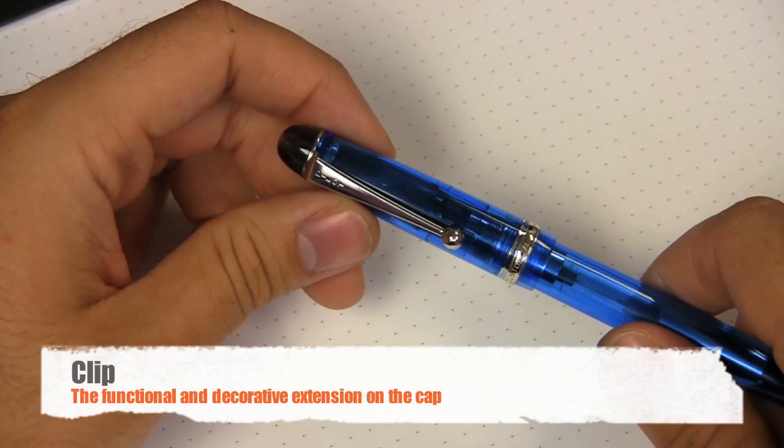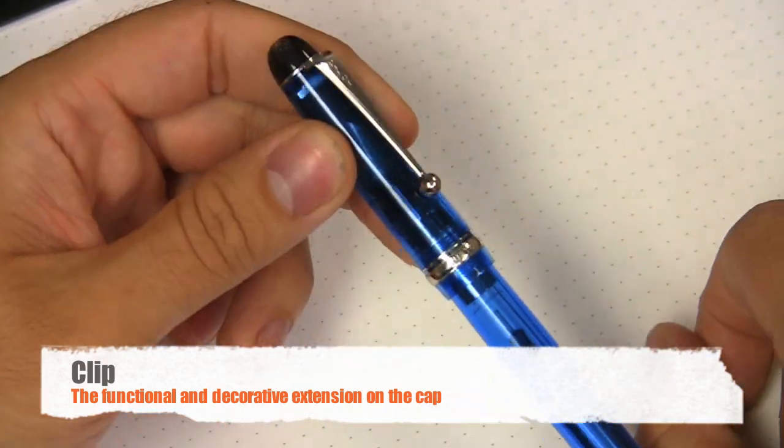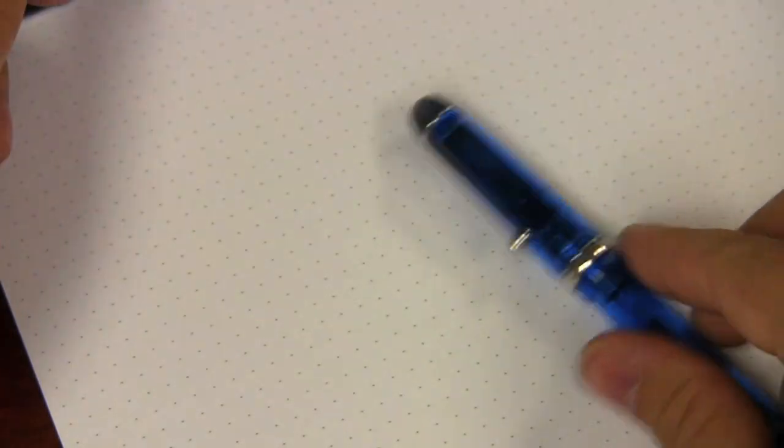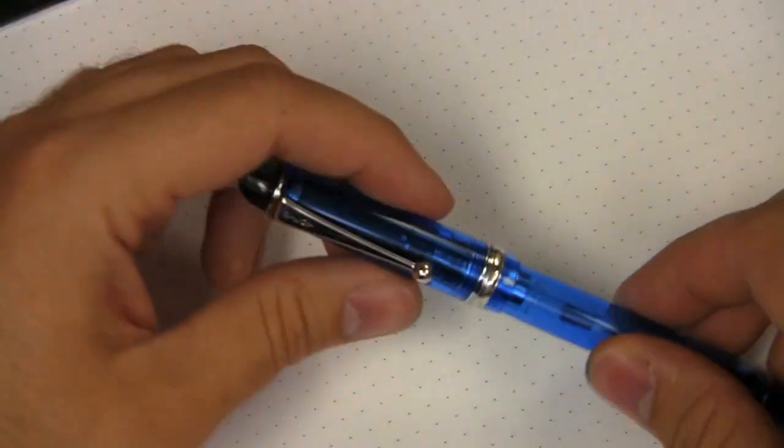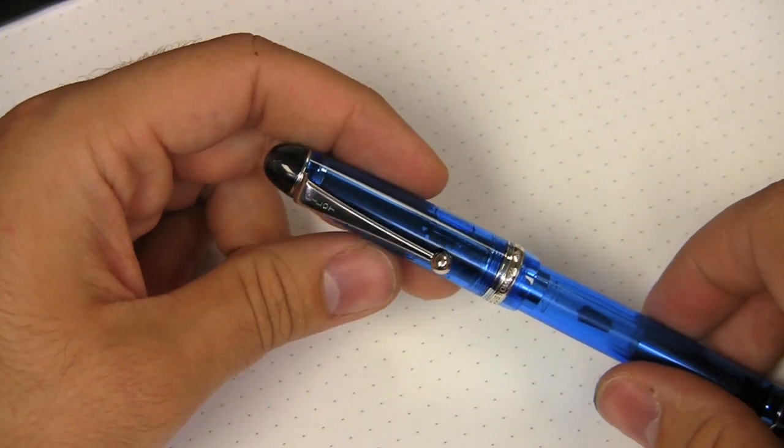The clip, and almost everybody's familiar with this one, but the clip is the part of the pen that allows you to put it into your pockets. It also keeps it from rolling around. It's a decorative item, but it's also functional too. Not every pen has it, but most of them do.